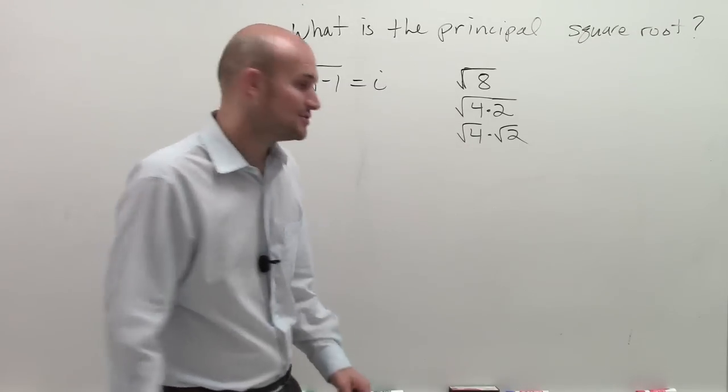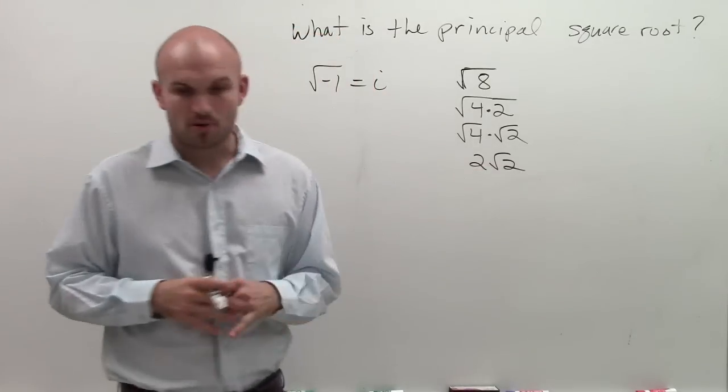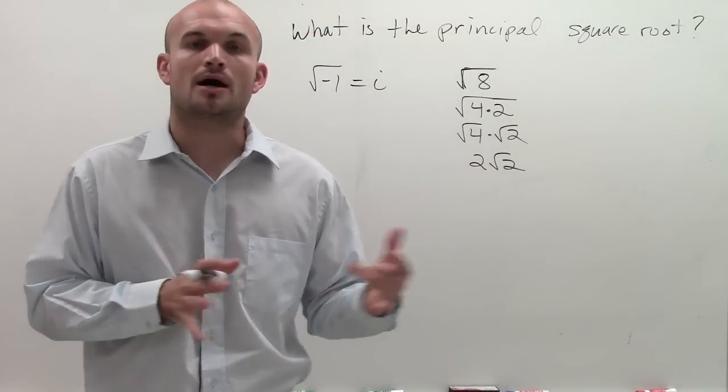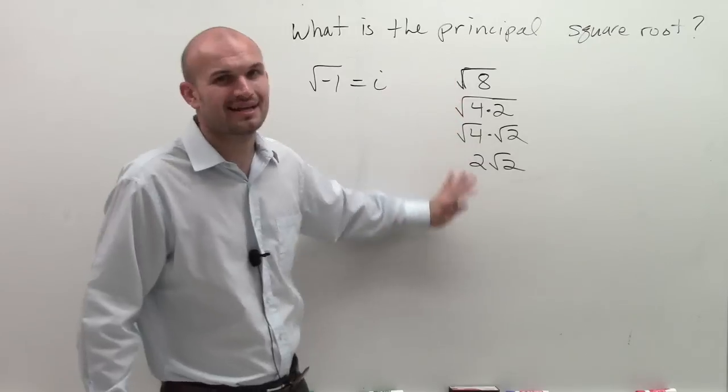So I have square root of 4 times 2. The square root of 4 now is 2 radical 2. So that is part of our rules with roots that allows us to do that.